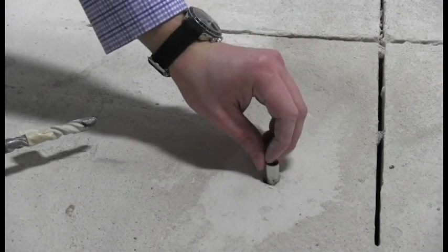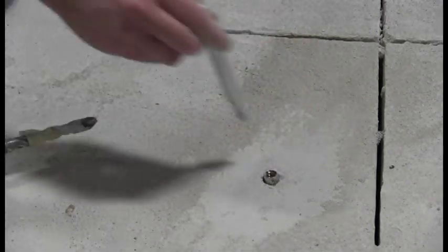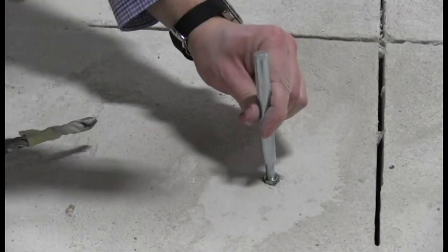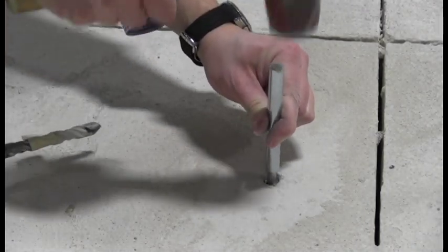Insert the anchor into the hole. Then, using the setting tool, expand the anchor by hammering the setting tool until its shoulder is flush with the top of the anchor.